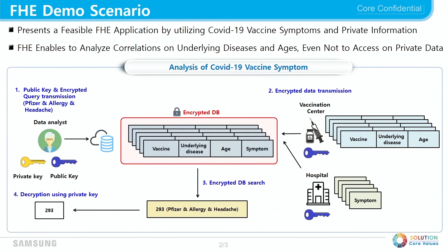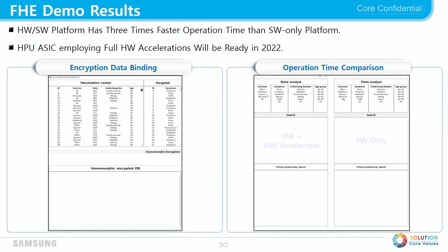This is the demo scenario. There is a data analyst who wants to know how many people suffer from vaccine side effects and what symptoms they have. To get such information, he needs to access two databases — one from a vaccination center and the other from a hospital — but they are all private. So, if the databases are merged, they need to be encrypted using a public key. Once the merge is done, he can start the search operation, using the benefit of hardware acceleration.